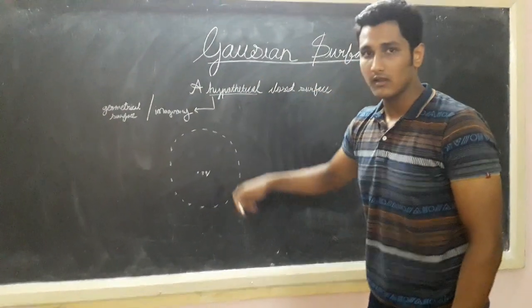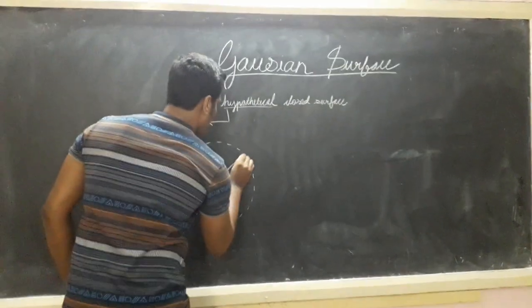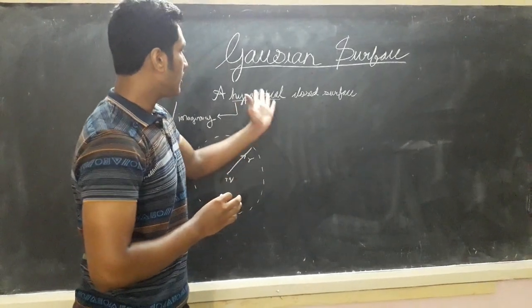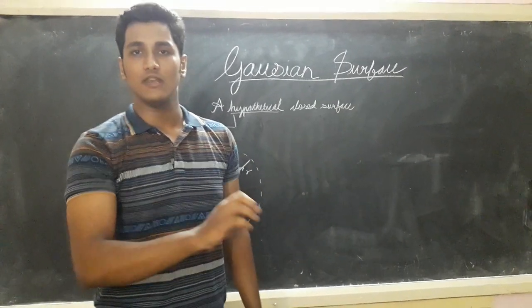So this is the hypothetical surface that we have imagined. Now how do we find electric flux of this point? It is just a dot product of electric field and surface area.